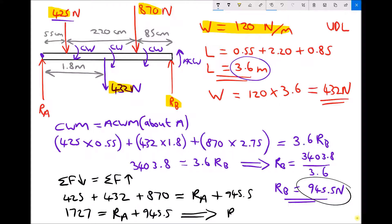So we get RA equals 1727 minus 945.5, which equals 781.5. So we've found RA, 781.5, and we've found RB, 945.5.